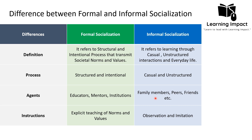For example, children learn about respecting elders by observing how family members engage in conversation — this is learning through family members. Also, if an individual has a social circle, peers and friends teach them how to behave in different circumstances within that social circle. This is informal socialization.